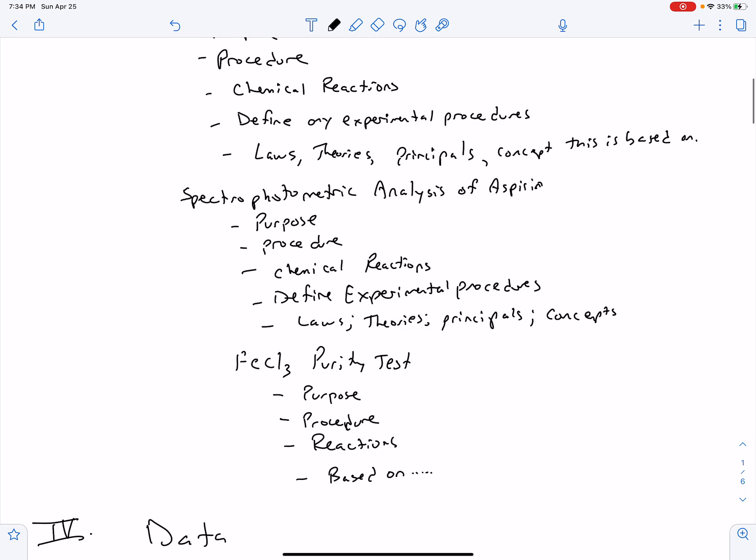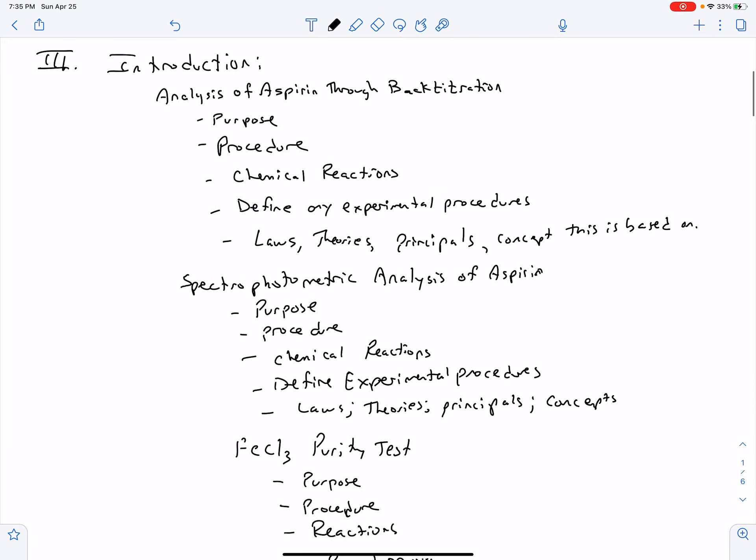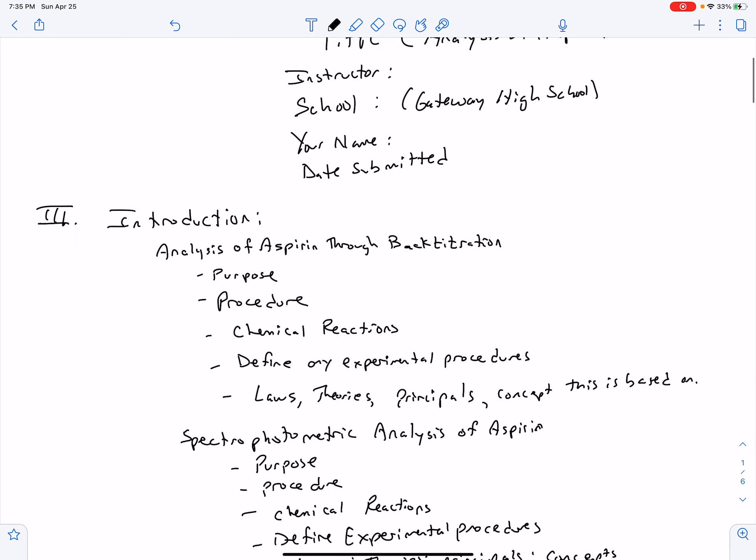Define those experimental procedures. Remember we're doing spectrophotometry, so you might want to define that. Remember spectrophotometry and the law, Beer's Law, that it was built off of. And any other procedures, concepts, theories, and principles that you think may apply. Ferric chloride purity test is probably our shortest portion. No laws here, but remember the statement that we had about phenols versus esters, the concept here. So the purpose of this with those three test tubes, how you actually went through and performed this procedure, any reactions to this. Were there any reactions? If not, that's okay. Maybe there were not, or maybe there were. And then finally, what is this based off of?